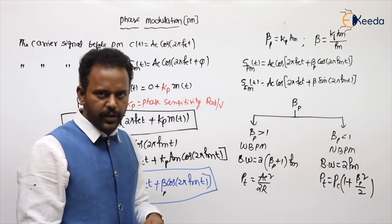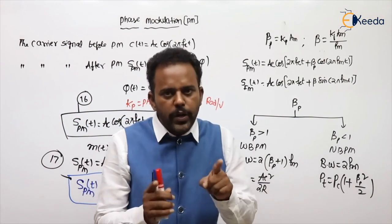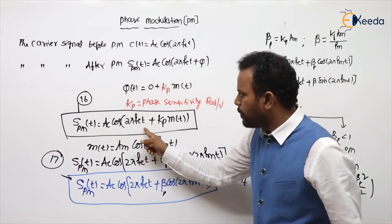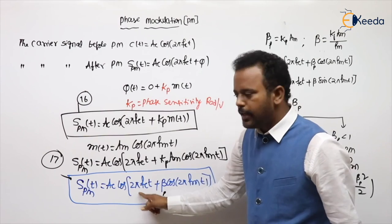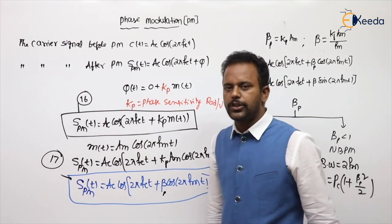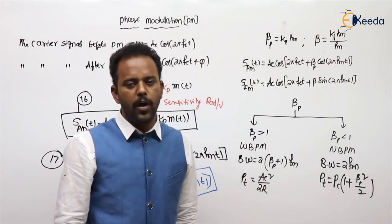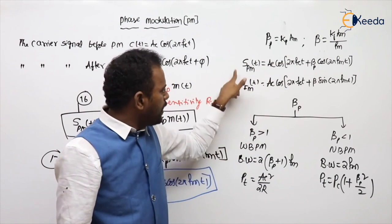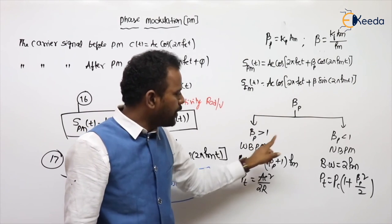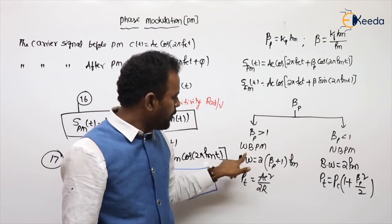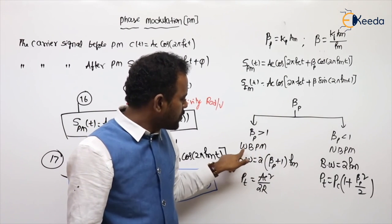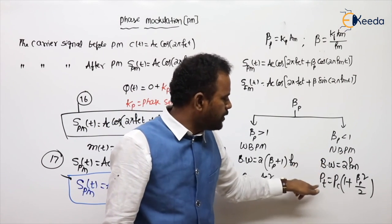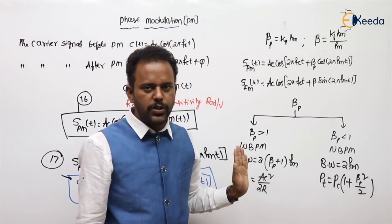So up to here is sufficient. In this discussion, what you need to understand and remember for the exam: the general expression and single tone expression for PM, what is the β_p value (which is kp·A_m), the modulation index, and based on that we have two types — wide band PM (WBPM) with its bandwidth and power formula, and narrow band PM with its bandwidth and power formula. These points you need to remember.